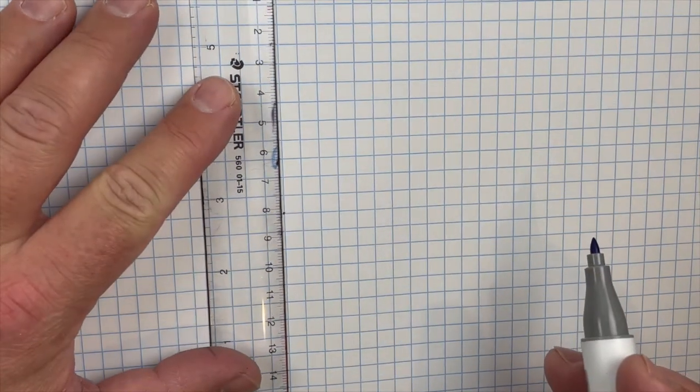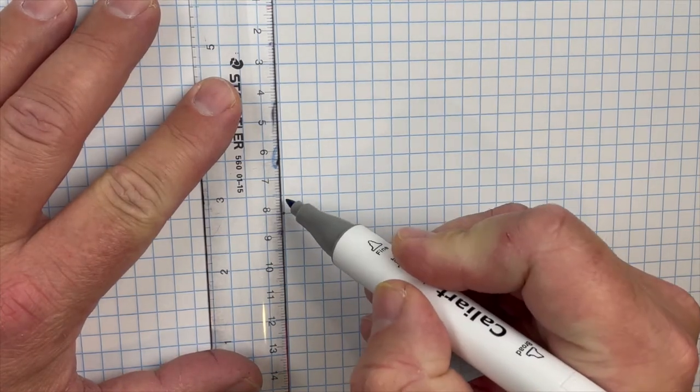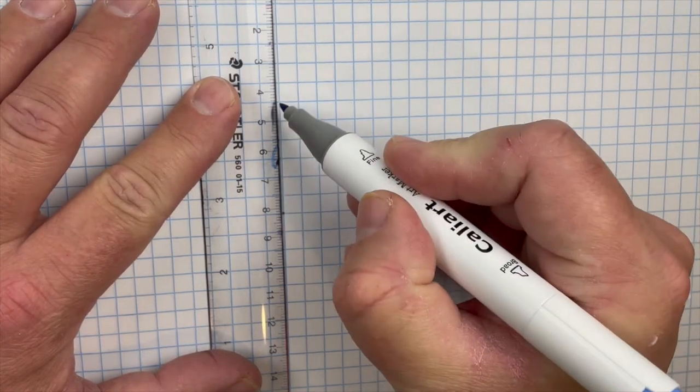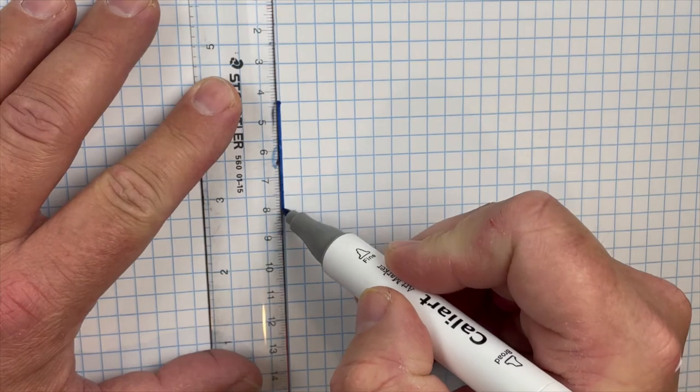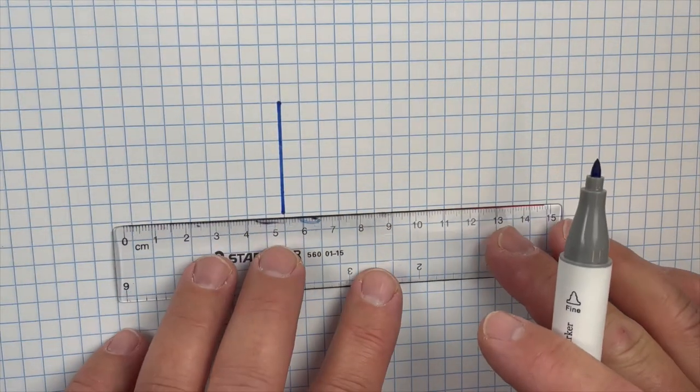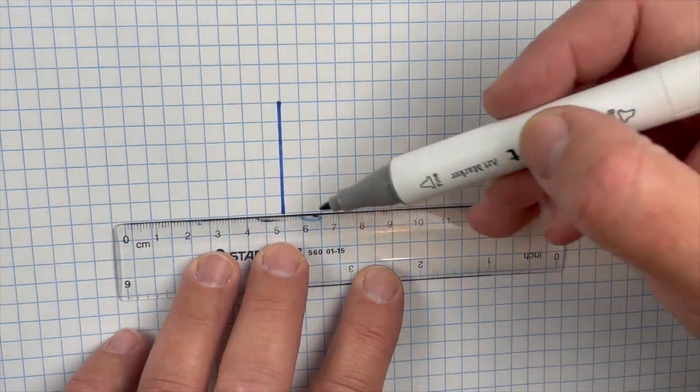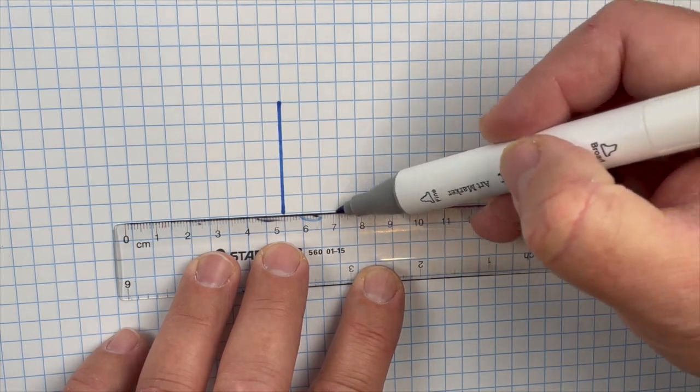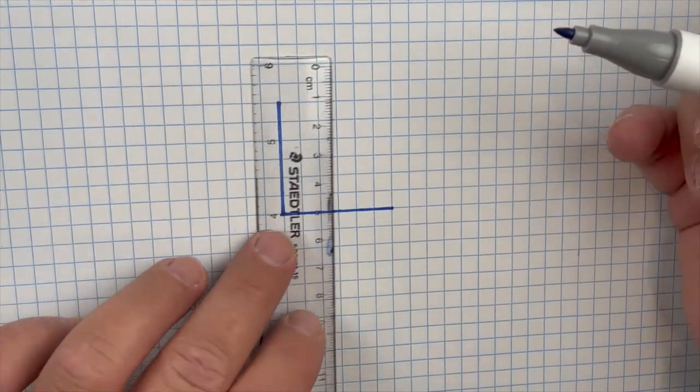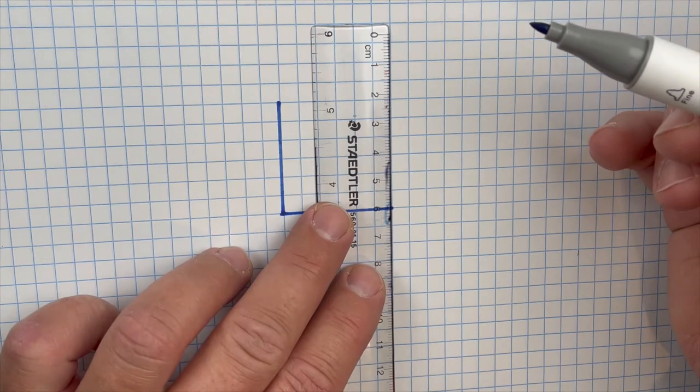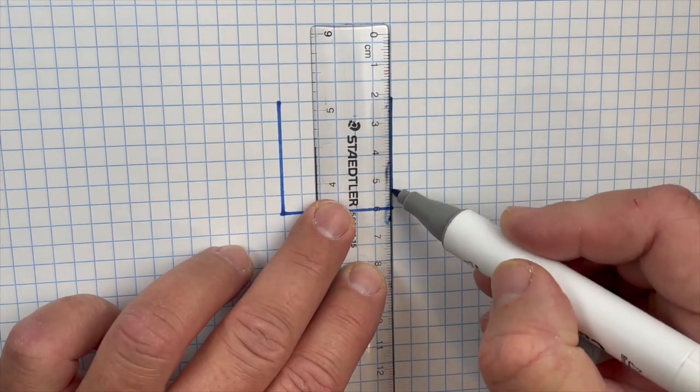Alright guys, as you see, I am using graph paper, I'm gonna make this super easy for you guys. Let's start out with a perfect square. I chose to do 6 cubes by 6 cubes, feel free to make yours bigger, smaller, whatever you want, but you are going to start out with a perfect cube, which basically means that all 4 sides are exactly the same.